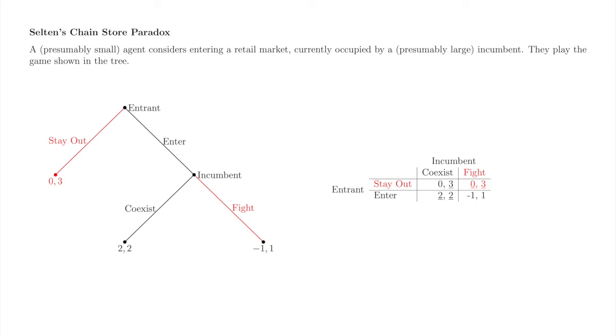It's a Nash equilibrium, but the incumbent cannot credibly threaten to fight due to the dynamic nature of the game. If the entrant enters, the incumbent will inevitably back down from the fight, because after the entrant enters, it is in the incumbent's own interest to coexist with the entrant.